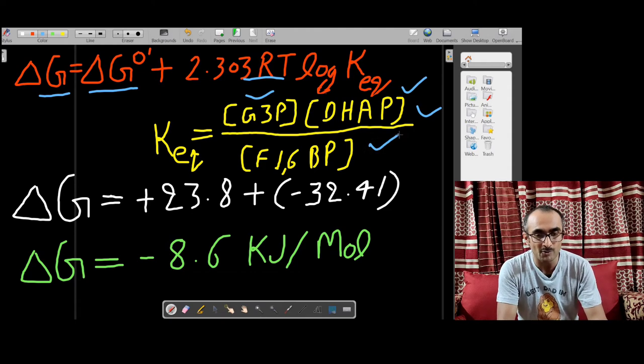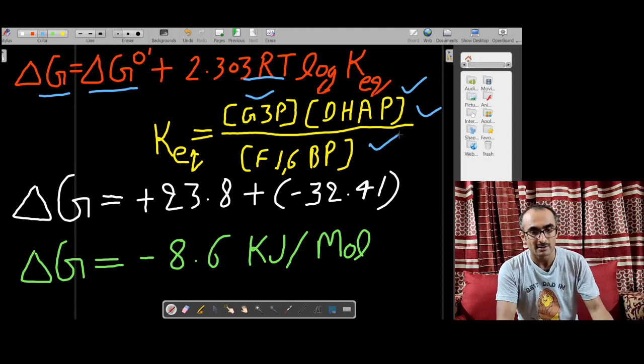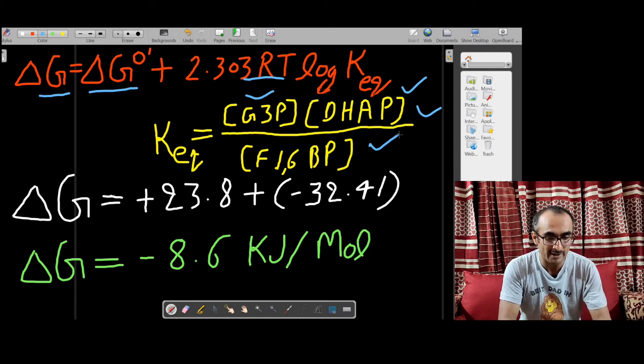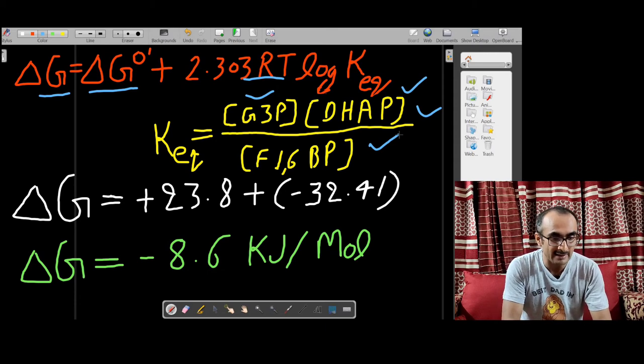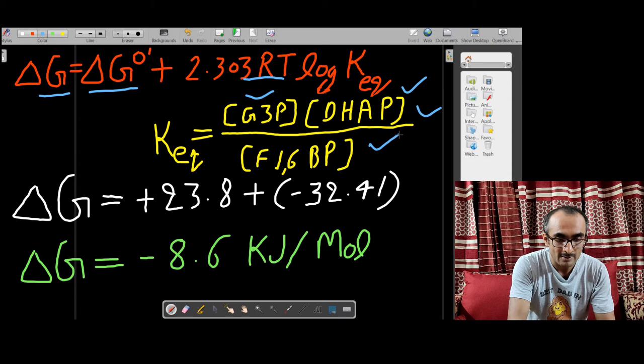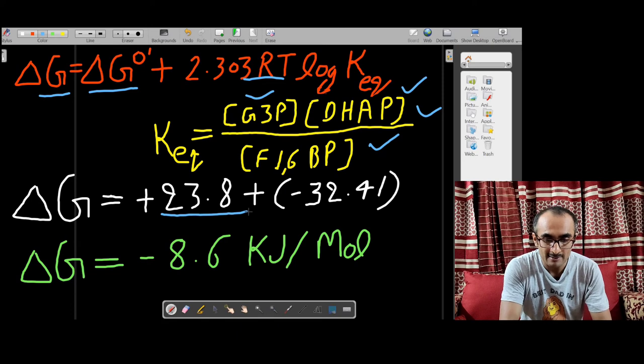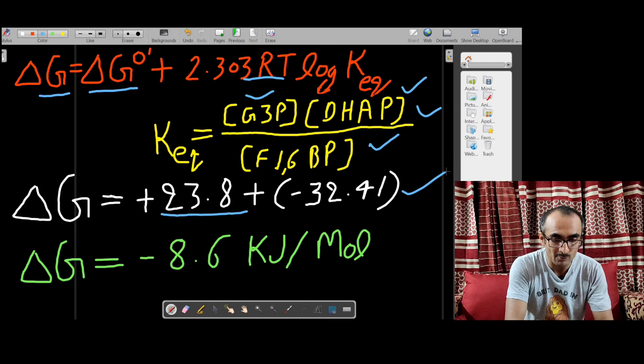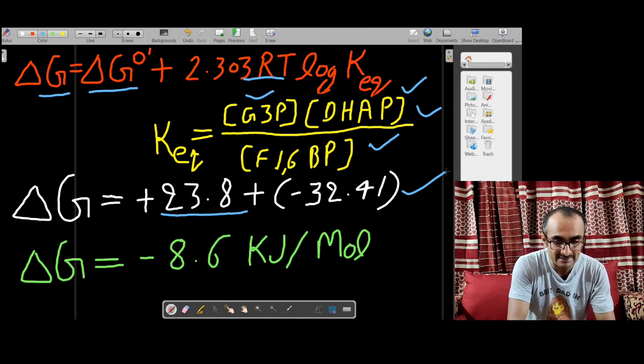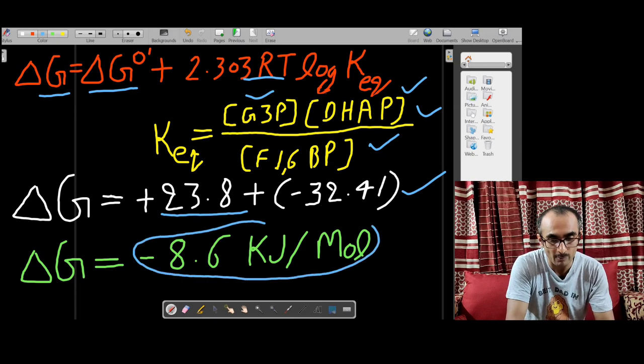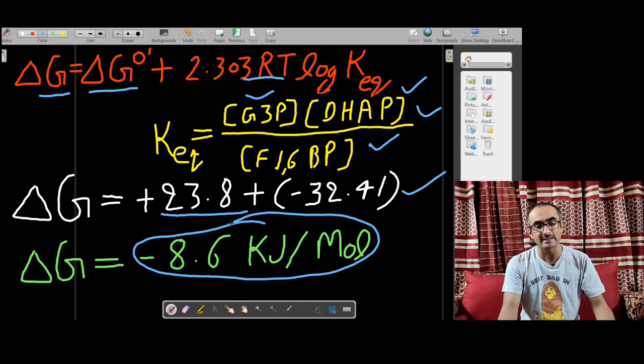If you put all these values into this equation from the numerical problem, you will find that ΔG = +23.8 (this is ΔG°′) + (-32.41), and this value equals -8.6 kilojoules per mole. So this is the actual free energy change for the given reaction.